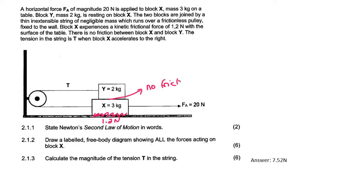The tension in the string is T when block X accelerates to the right. That's very nice - they're telling us the direction of motion, so we're going to be moving in this direction. Now be careful, what does that mean for this one? If you look at the way it wraps around here, it means that block Y is going to go towards the left.